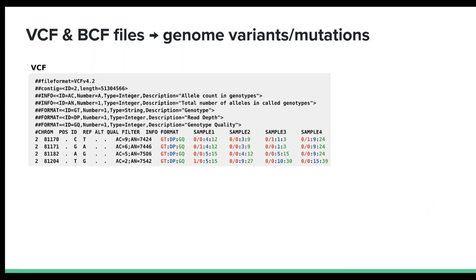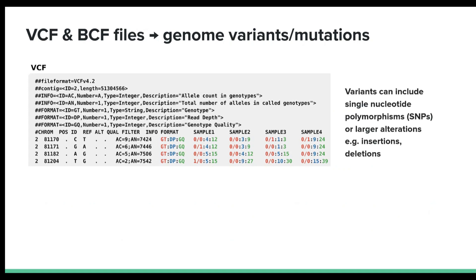VCF files, standing for Variant Call Format files, are the standard file format for storing information about genetic variants or mutations detected through DNA sequencing experiments. Such variants might include single nucleotide variants, or larger variants such as insertions, deletions, or structural alterations. VCF files are text files in the tab-separated format, and each column contains a predefined field, including the chromosome position of the variant, the reference allele, the alternative allele, quality score status, and additional information. The REF allele represents the reference allele found in the reference genome, while the ALT allele represents the alternative allele that was observed in the experiment.